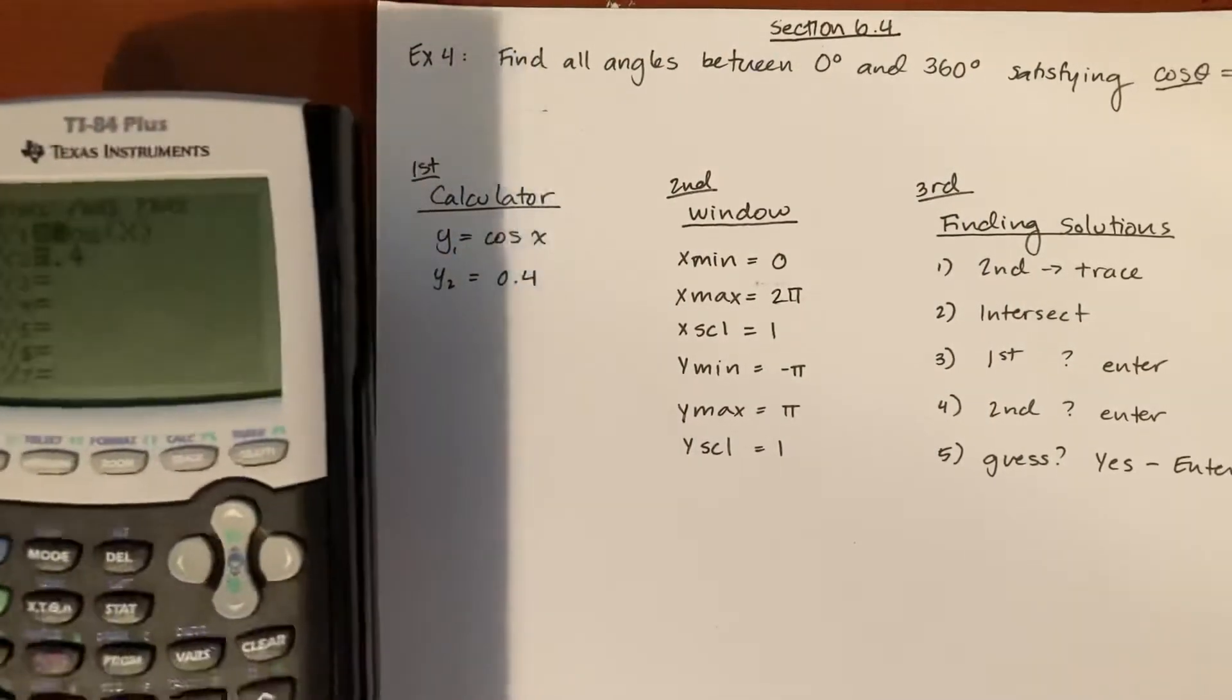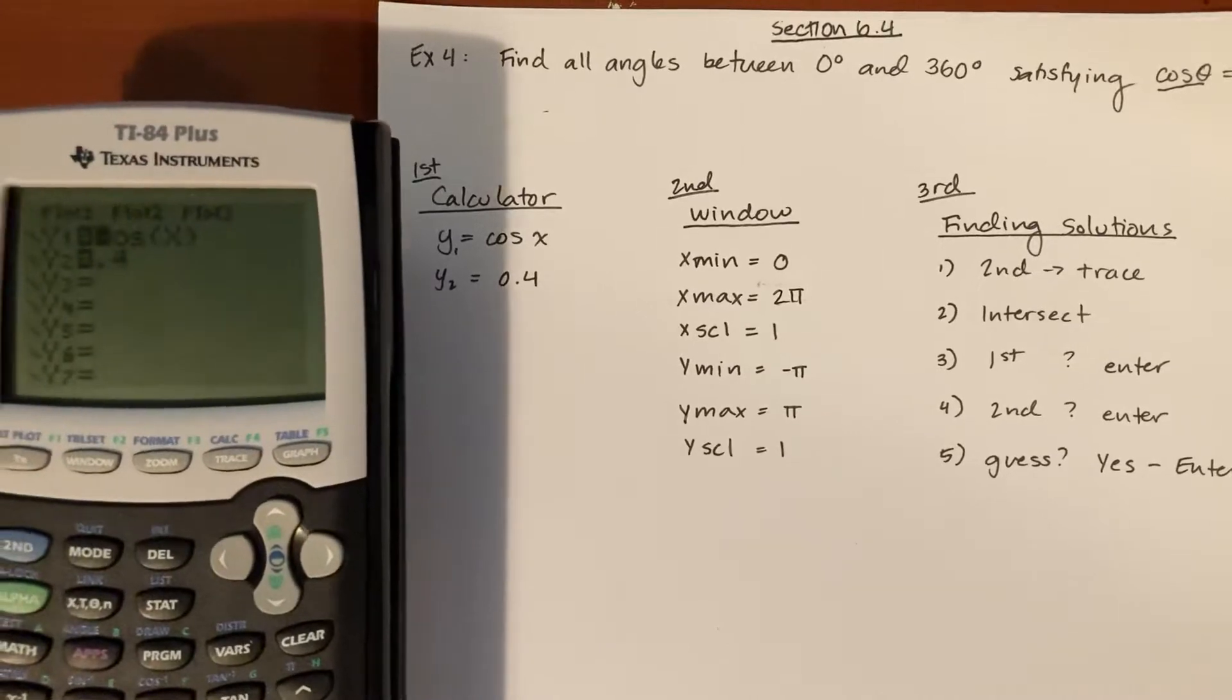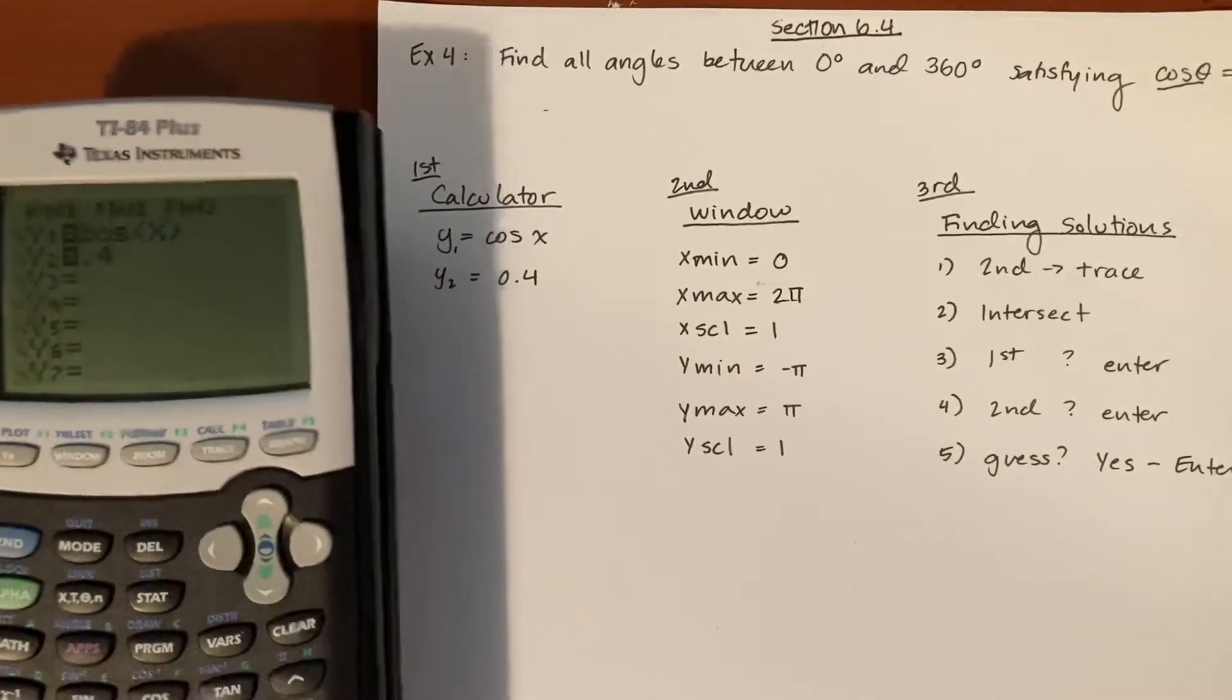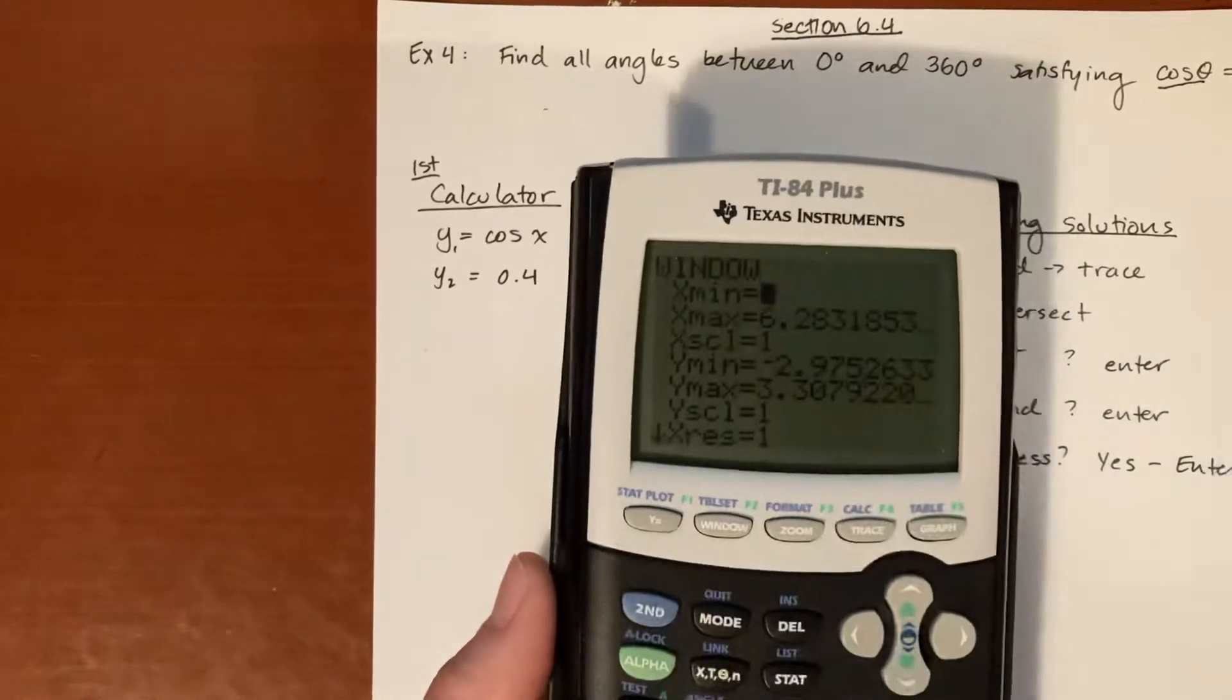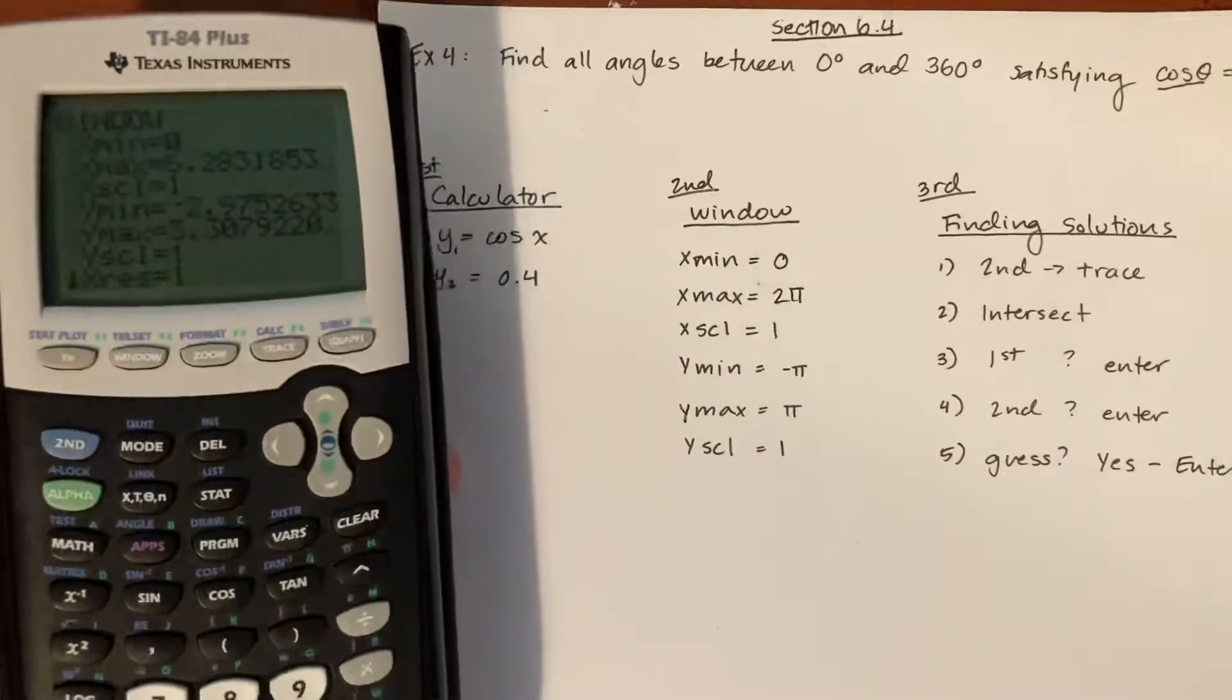The next thing we want to make sure of is that our window is correct. What does that mean? Well, that's the scale we're going to be graphing with. Let's go ahead and hit window, right there, that button. We hit that and we want to make sure that our minimum is zero. Why are we doing that? Well, because we're looking between zero and 360.